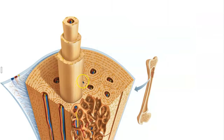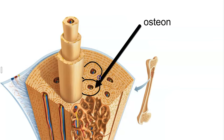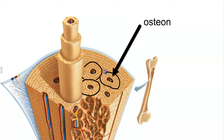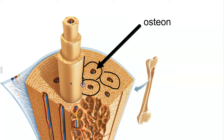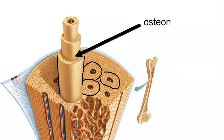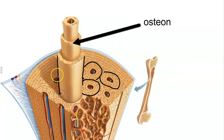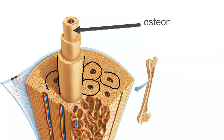Taking a closer look at compact bone, each one of these circular structures is a cross section of an osteon — the straw-like structure. They're even taking an osteon in this picture and pulling it out of the bone so you can see the different segments. Everything outlined here is a single osteon.